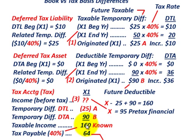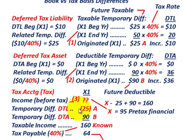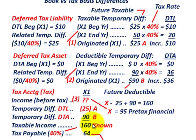Just to show how the $160,000 reconciles: you had $95,000, subtract $25,000 for the temporary difference related to the deferred tax liability, then add back the deferred tax asset temporary difference of $90,000, and you come up with taxable income of $160,000.